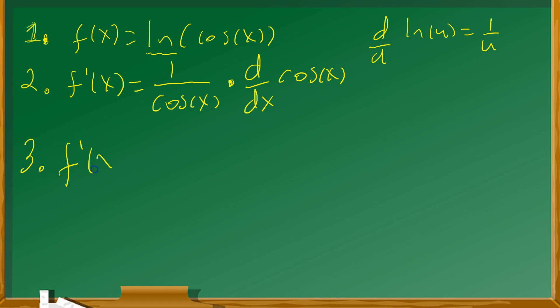So f prime of x equals 1 over cosine x. The derivative of cosine x is negative sine. That goes into this position. You're multiplying by it. Then you write this. So you have sine over cosine. So you end up with f prime of x equals negative sine of x over cosine x.